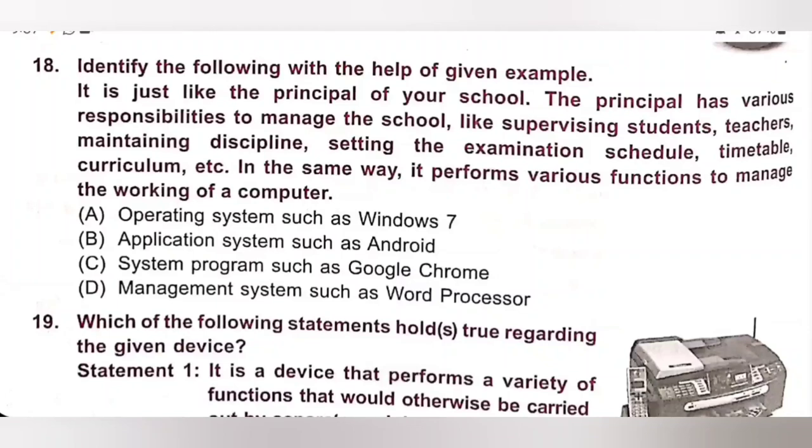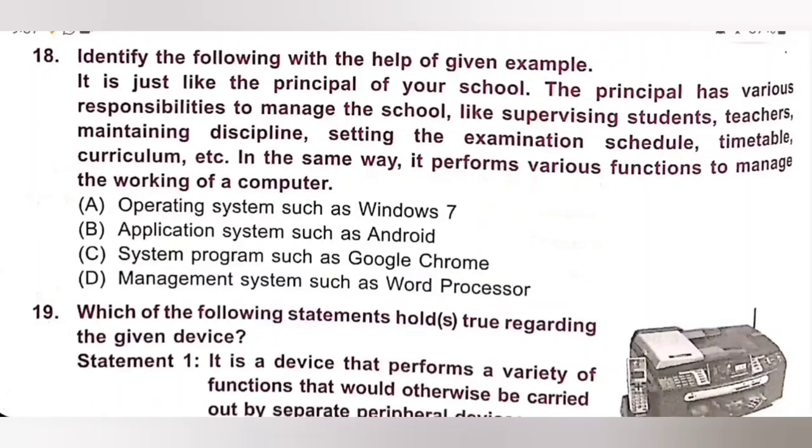So, actually, the correct answer is option A, operating system such as Windows 7. Operating system is an interface between a computer user and computer hardware. It is software which performs all the basic tasks like file management, memory management, process management, handling input and output, and controlling peripheral devices such as disk drives and printers. Option A is the correct answer.